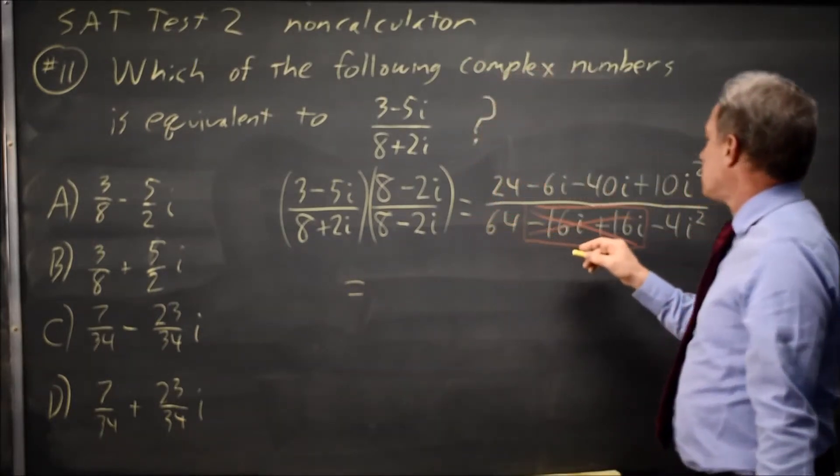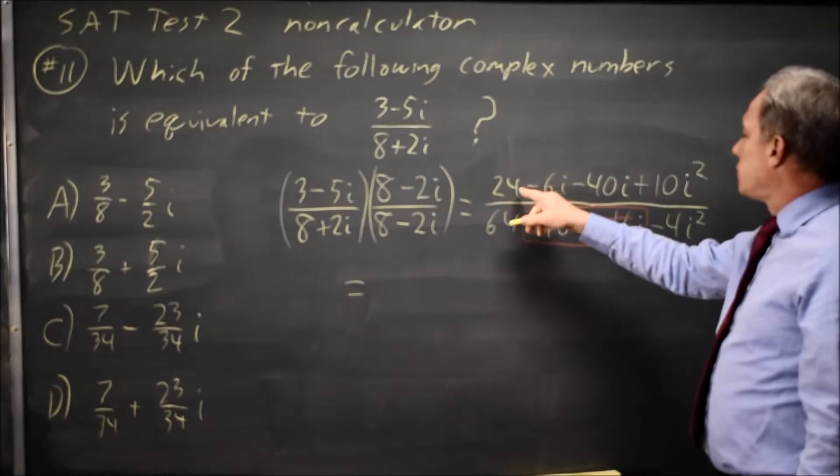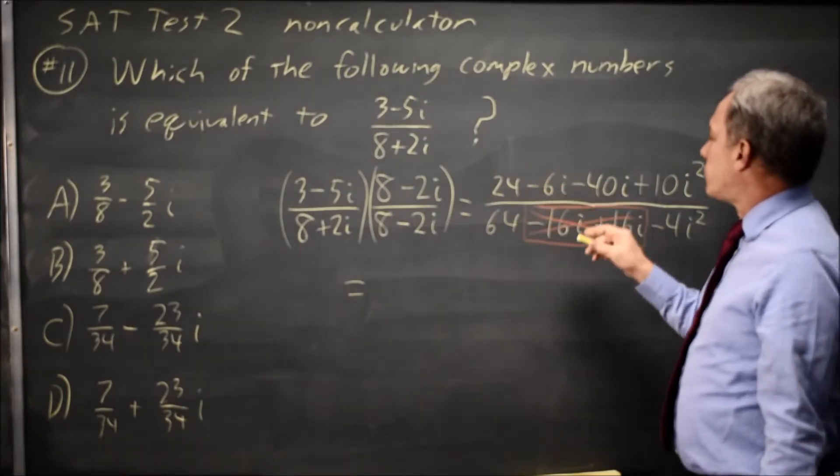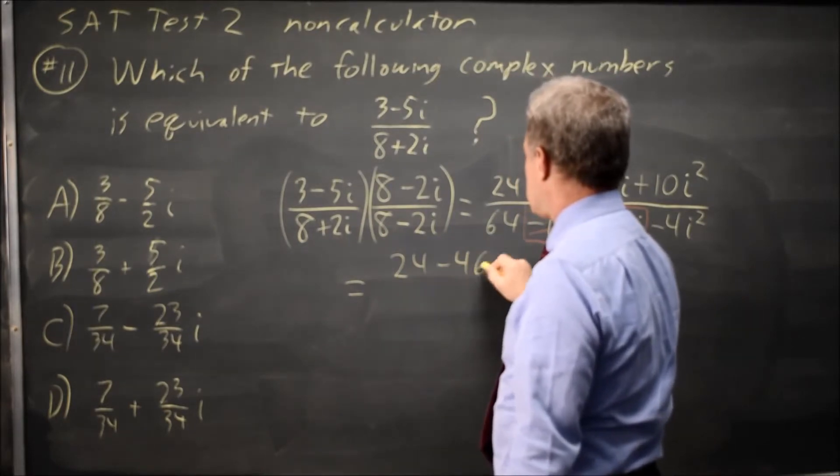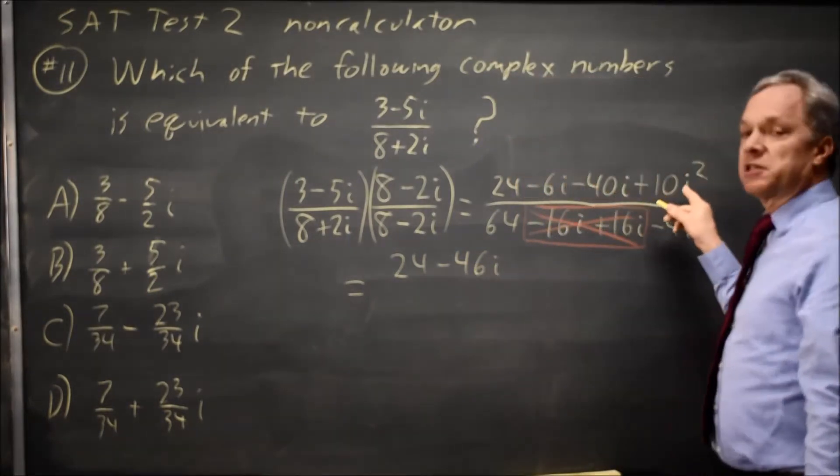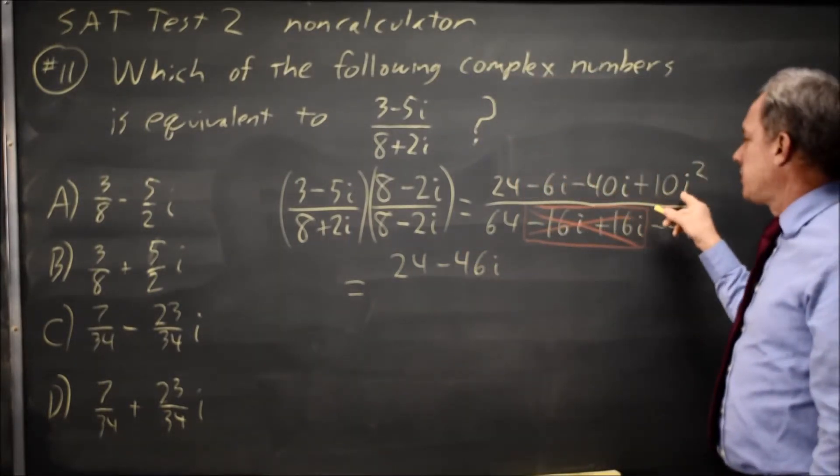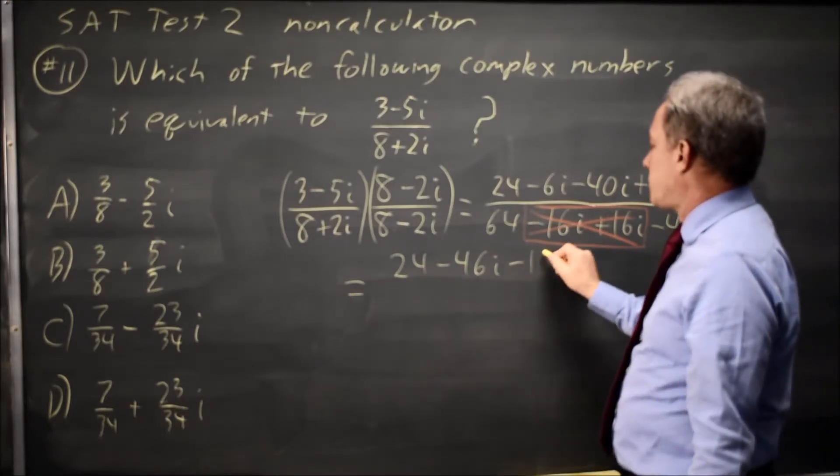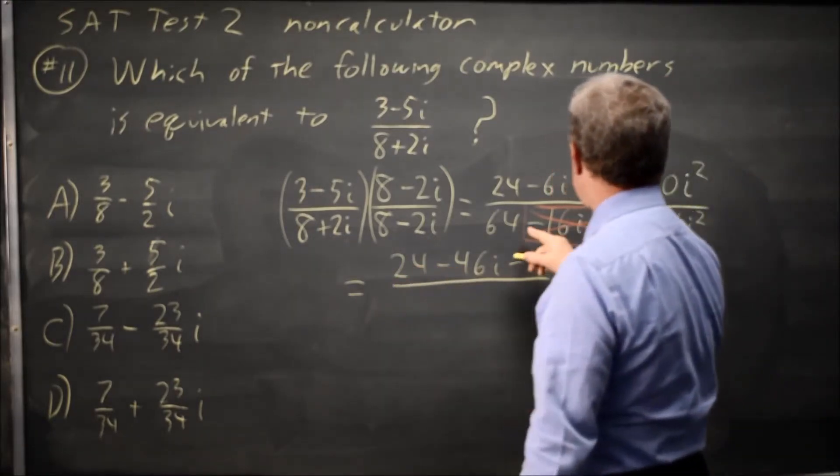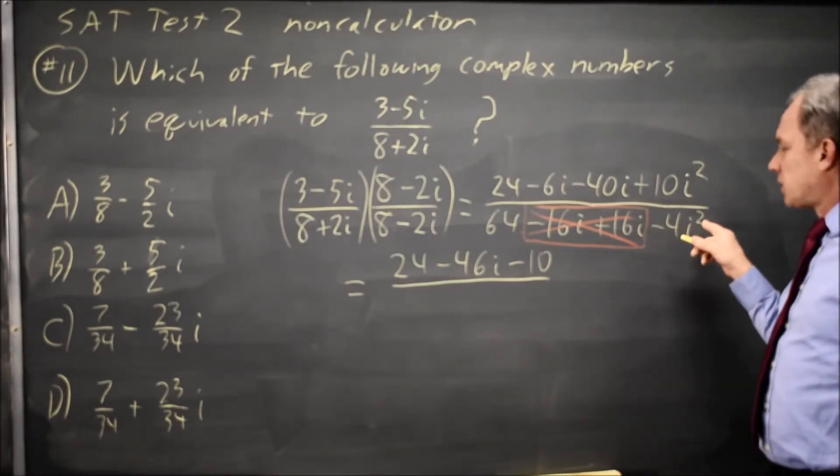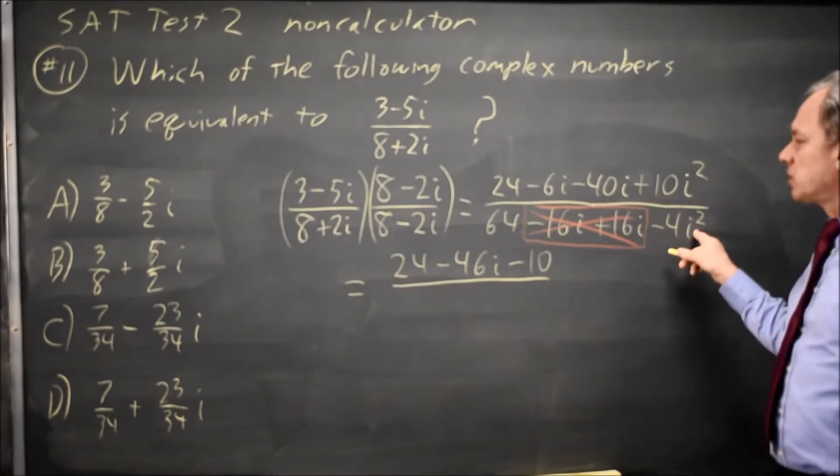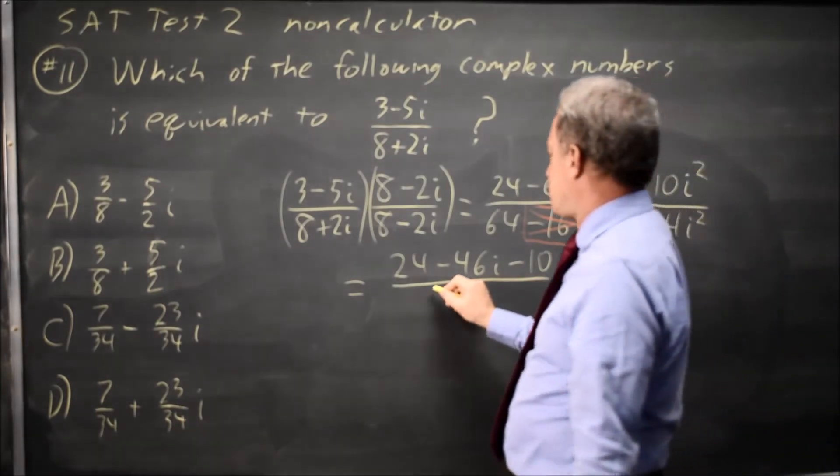So our numerator, 24 minus 46i. And then the i squared is negative 1, so 10i squared is 10 times negative 1 is negative 10. And the denominator is 64 minus 4i squared, negative 4 times i squared, which is negative 1, is positive 4. 64 plus 4 is 68.